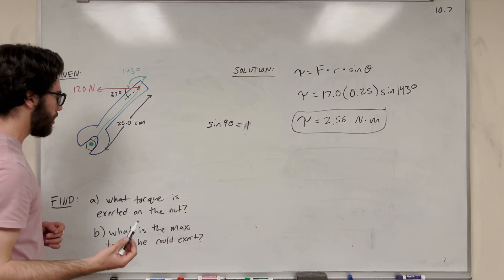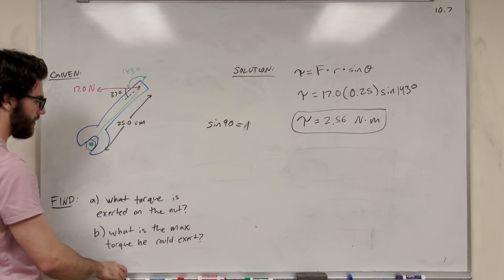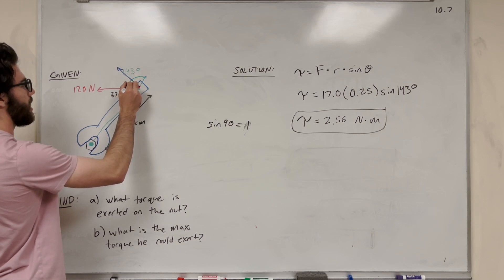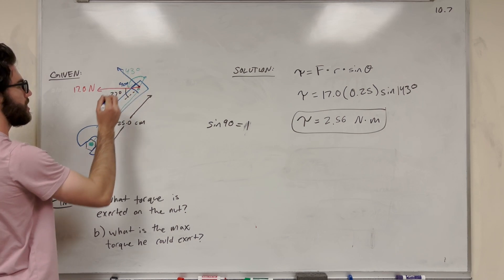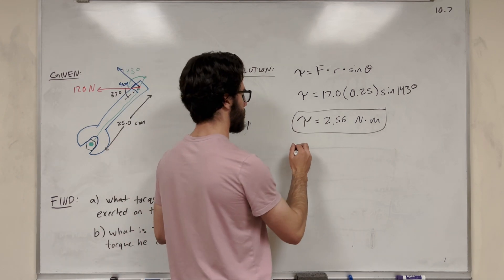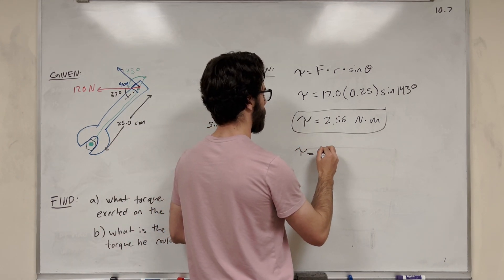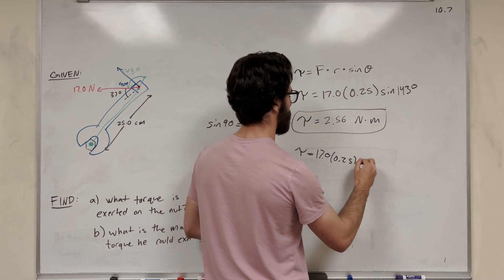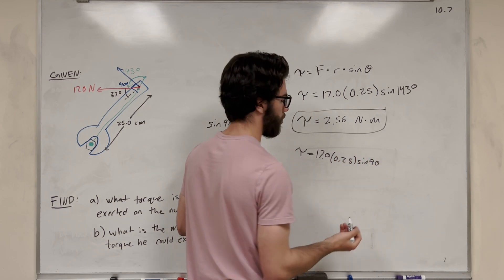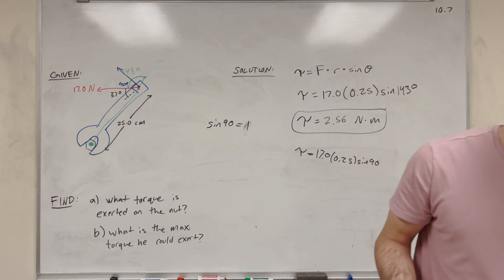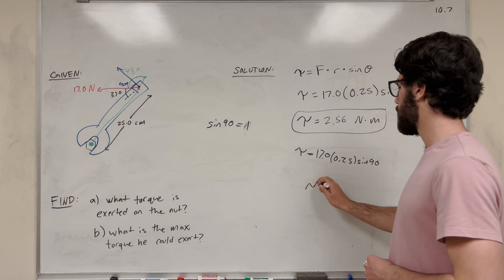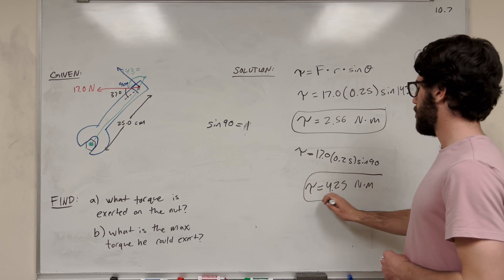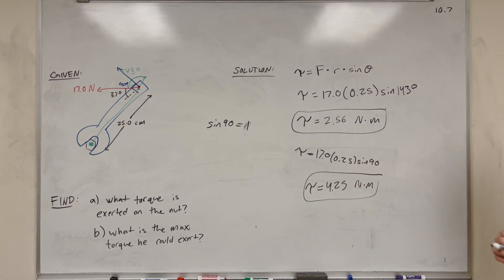So what we want to do is we want to pull at a 90-degree angle. So instead of pulling at that 37-degree angle, we could instead pull at a 90-degree angle. And now if we pull at a 90-degree angle, our new equation is going to look like, we're going to have the same exact force, we're going to have the same distance, but it's going to be sine of 90, which is just equal to 1. So then all we're doing is multiplying those numbers together, and you get that the torque new would be 4.25 newton meters. So we can almost pull twice as hard just by changing that angle.